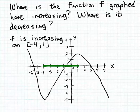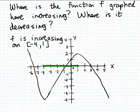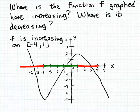Now, where is the function f decreasing? If we scan from left to right as we think of the inputs increasing, the outputs are going to be decreasing where the curve is falling. Over here on the left-hand side of the graph the curve is falling, and then again past the input 1 the curve is falling again. Tracing over that portion of the x-axis in red, we can see that the curve is falling from minus infinity — because this graph starts at minus infinity on the x-axis — and then the outputs are decreasing beginning at positive 1, continuing out to positive infinity on the x-axis.